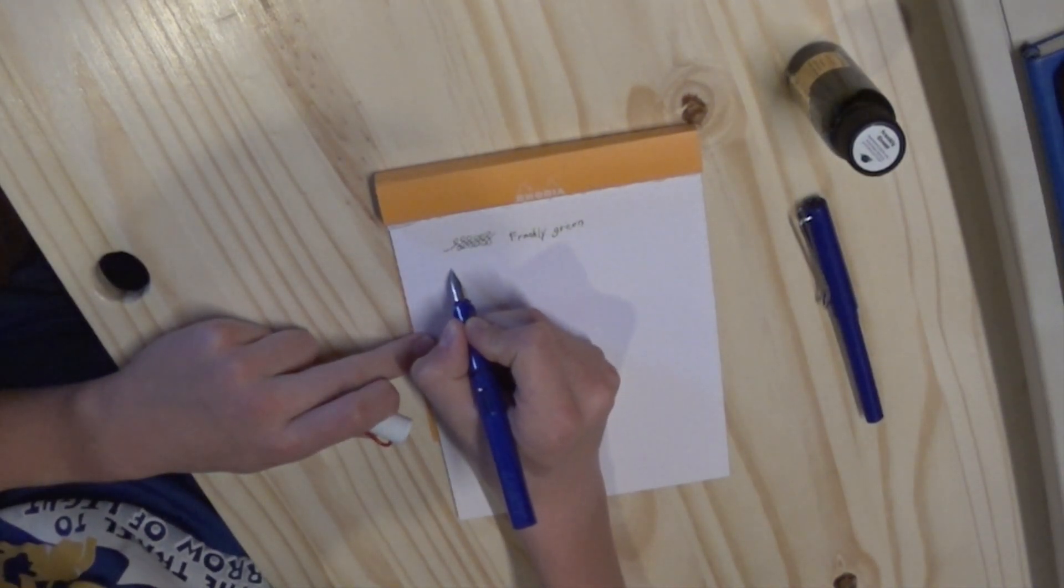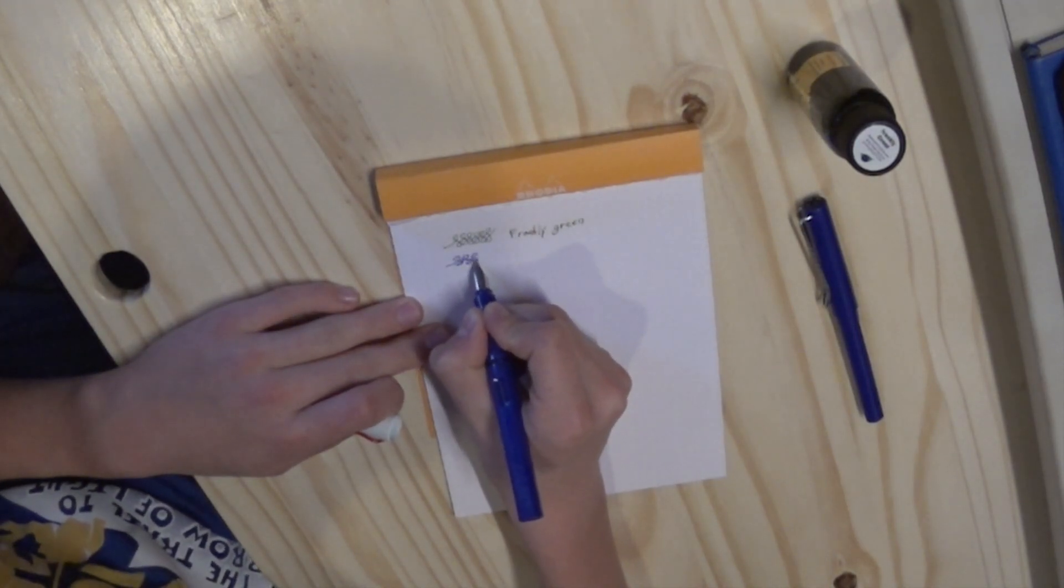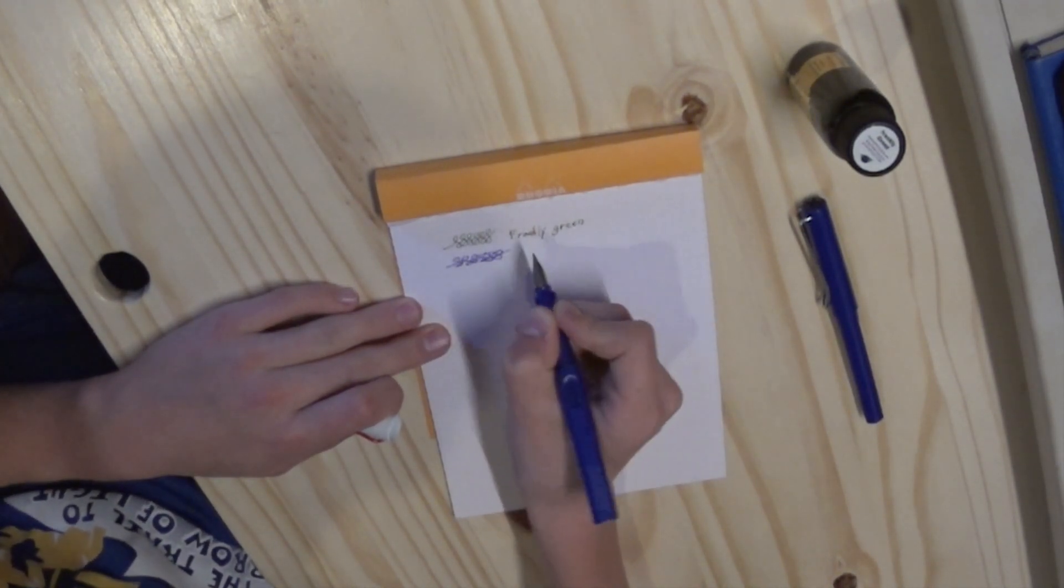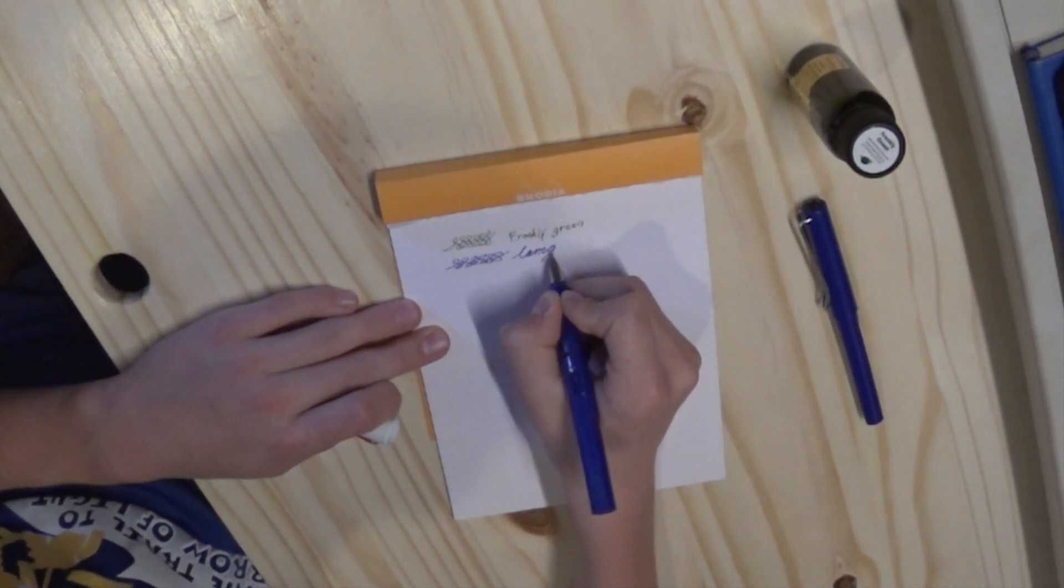So here's a writing sample for this. That one's a fine nib, this one's a medium nib, so it's a lot smoother because it's been tuned. And this one has Lamy blue.